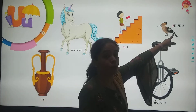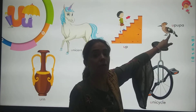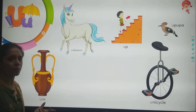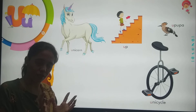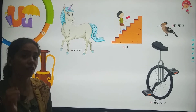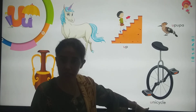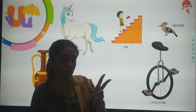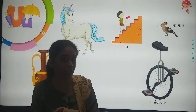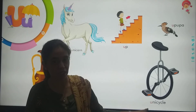U for Upupa. What is this? It is a type of bird — this is Upupa, this is a bird. Then U for Urn. It is a type of flower vase — the one we keep at home in a corner, in which we fill flowers. So this is an Urn. Then U for Unicycle. A cycle can be of two types: the one with two wheels is a bicycle, and the one with only one wheel — that is a Unicycle.